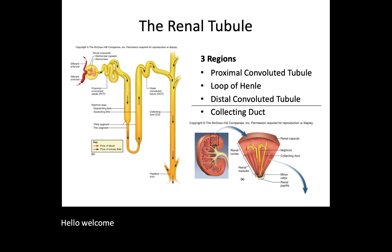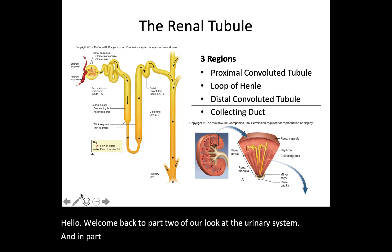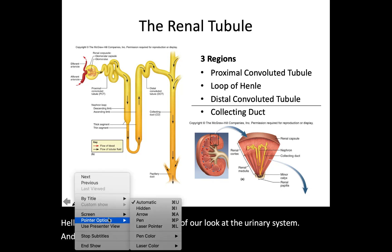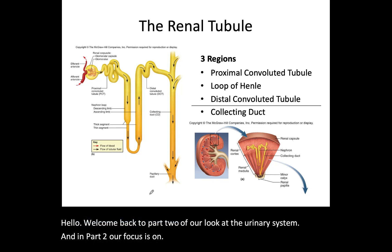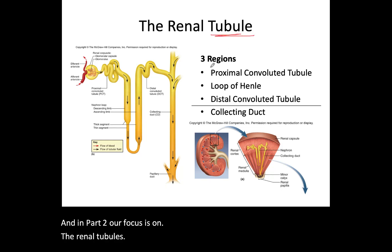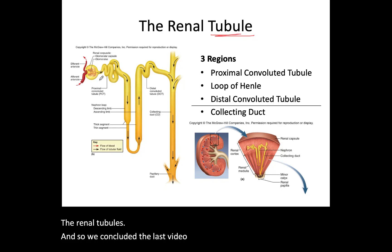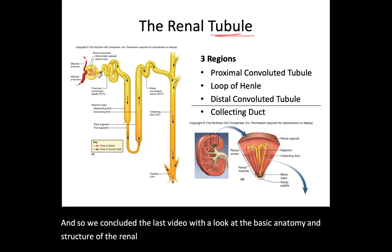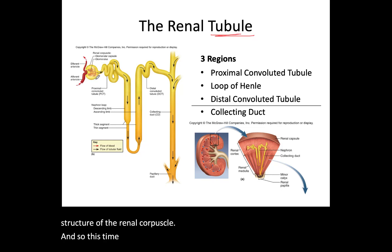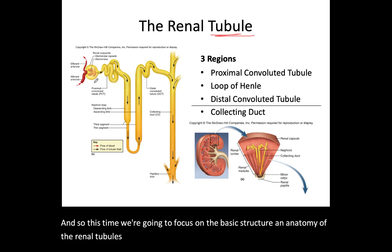Hello, welcome back to part two of our look at the urinary system. In part two, our focus is on the renal tubules. We concluded the last video with a look at the basic anatomy and structure of the renal corpuscle. This time we're going to focus on the basic structure and anatomy of the renal tubules, for which we know there are three regions.